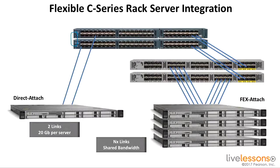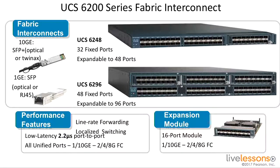In most cases, customers use the Fabric Extender configuration to get the most scale for their money. These are the 6200 series Fabric Interconnects — there was a previous 6100 series, and there will always be newer ones coming out. I encourage you to go to the Cisco website to see the newest products, expansion modules, servers with the newest processors, and the fastest memory. But the architecture stays the same, and the Fabric Interconnects are the heart of the architecture. Please join me for the next lesson, 4.10 Power Redundancy Modes.